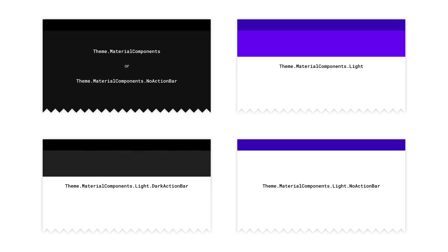Let's look at how we can fix this by migrating our app theme. The first thing you need to do is ensure that your theme is inheriting from a Material Components theme. If you were previously inheriting from an AppCompat theme, the MDC Android themes map one-to-one with these. At this stage, your theme is likely missing some of the important MDC Android attributes while also having some AppCompat or platform attributes you no longer need.